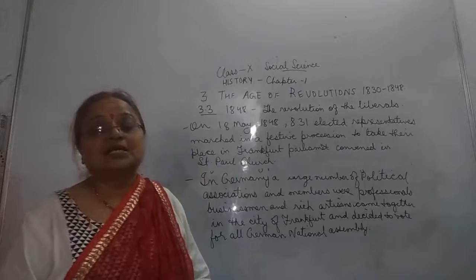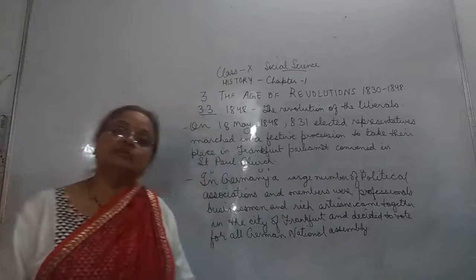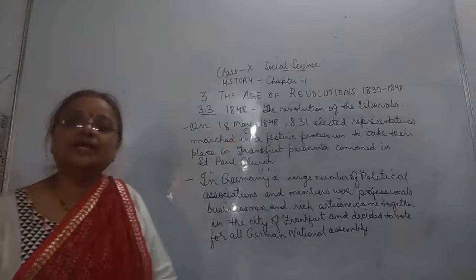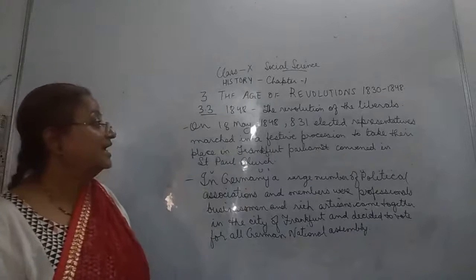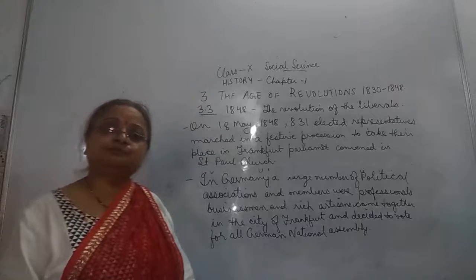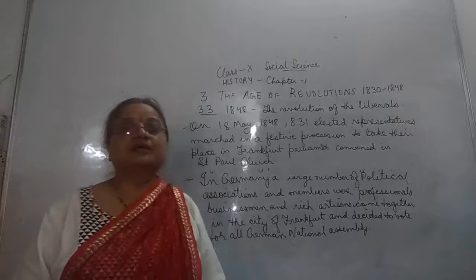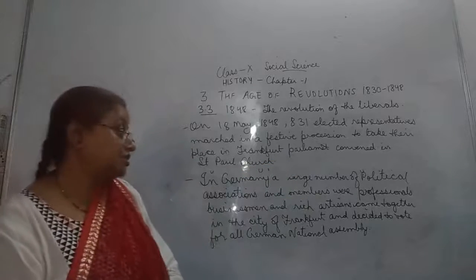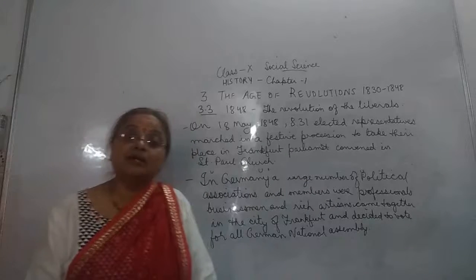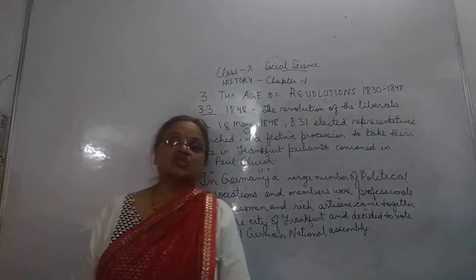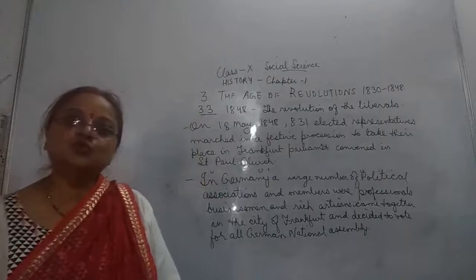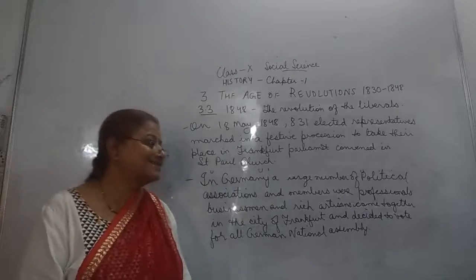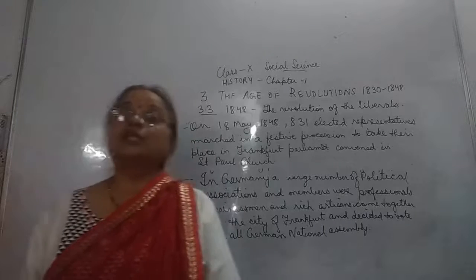As a result, on 18 May 1848, 831 elected representatives marched in a festive procession towards Frankfurt. There was a parliament convened in Frankfurt, where all the people came together and were trying to find a solution and a resolution for Germany. As a result, it was convened in St. Paul's Church.